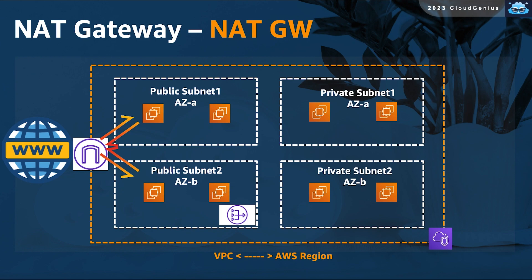NAT is short for network address translation. If you do not have a strong network background, NAT refers to the process that happens in everyone's network when your traffic needs to traverse the internet. You need to convert your private IP to a public IP that can be used over the internet — you need someone to do the translation. In our case, you need to create a NAT gateway in your VPC and place it in one or more of your public subnets. After that, adjust the routing tables of your private subnets so that your NAT gateway becomes the default route for any traffic outside the VPC.